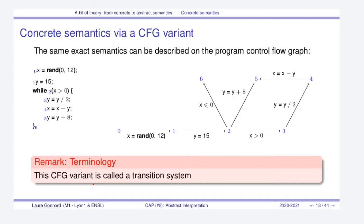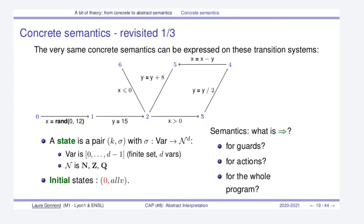In the following, we will define a slightly different version of the concrete small-step semantics on a model of the program that is a variant of the control flow graph. So let's say we have the program here where statements have been labeled by numbers, and the usual computation of the control flow graph gives us a model of the program depicted like that, where each transition is either an assignment or a test, and this graph begins with zero for the control point. This variant is called the transition system.